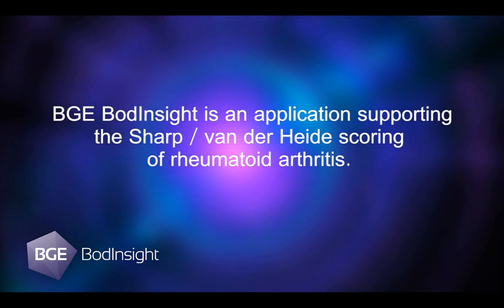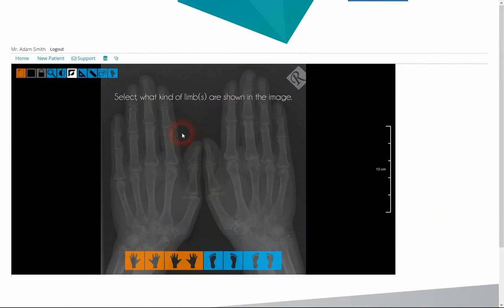BGE Bodinsight is an application supporting the Sharp van der Heide scoring of rheumatoid arthritis.